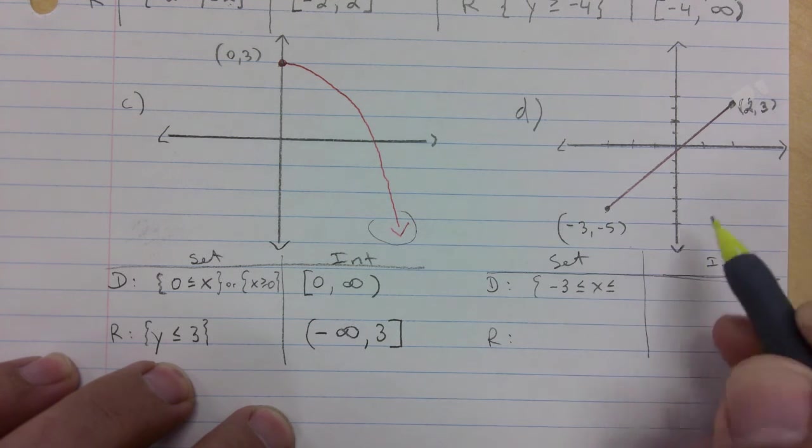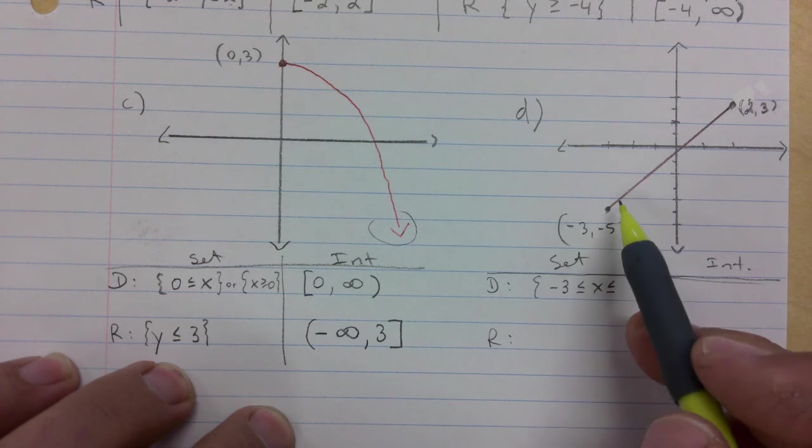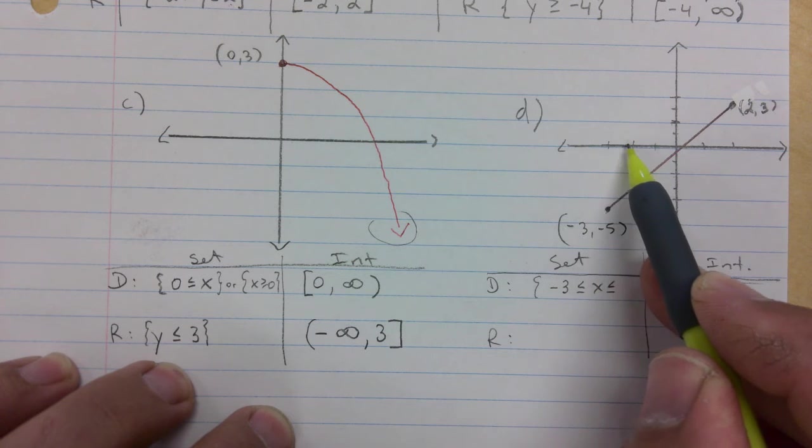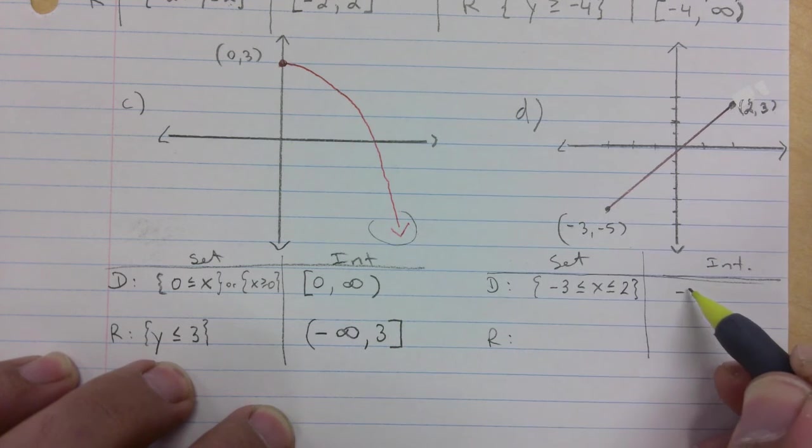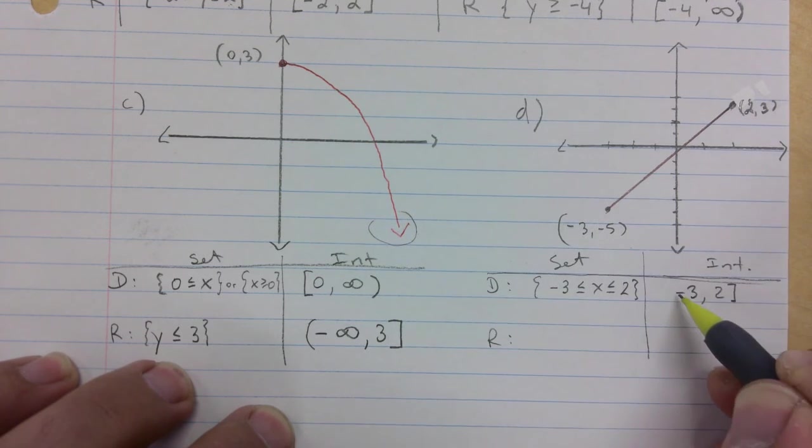X stops at positive two. So if you just look at the x values, you come along the x, go from negative three to positive two. And so it'd be negative three to two, square brackets on both ends.